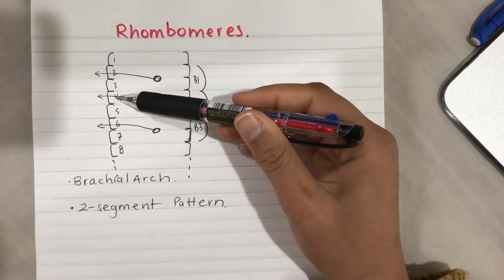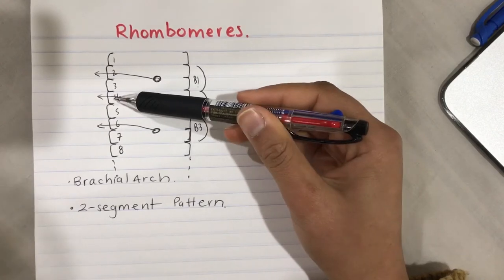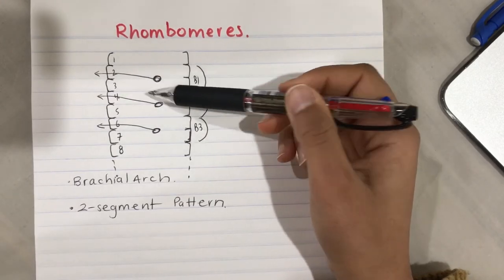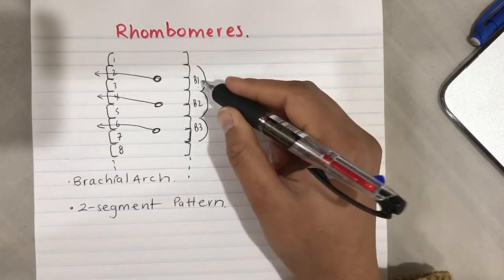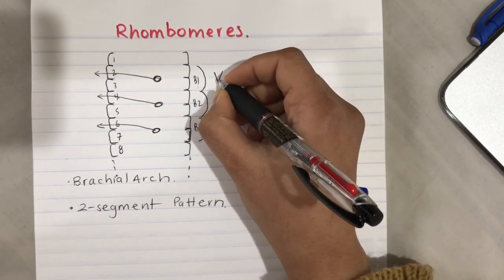If R4 receives a deficient amount of retinoic acid, it will express the same Hox gene as R3 and develop into a trigeminal nerve. Brachial arch 1 forms cranial nerve V, the trigeminal nerve.